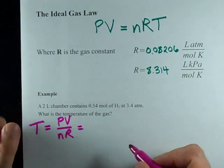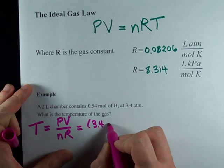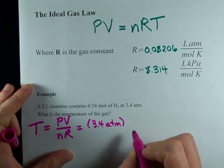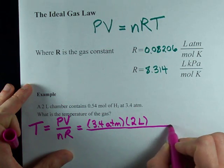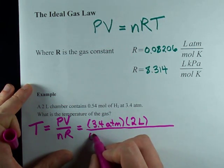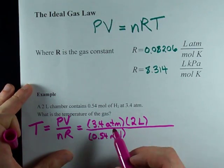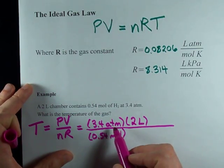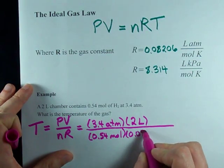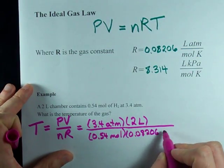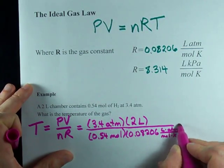This way, I could fill in my numbers all at once. My pressure was 3.4 ATMs. My volume was 2 liters on bottom. My number of moles was 0.54 moles. And the R I'm going to use, I need it to cancel with ATMs. So I'm going to use 0.08206 liters, atmospheres per mole Kelvin.